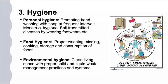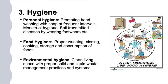The third part — hygiene — has three major elements. First, personal hygiene: promoting hand washing with soap at frequent intervals, menstrual hygiene management, and prevention of soil-contaminated diseases by wearing footwear. Second, food hygiene: proper washing, cooking, storage and consumption of foods plays a major role. Third, environmental hygiene: maintaining a clean living space with proper solid and liquid waste management systems, and maintaining such infrastructure — which is crucial in the rural and tribal context.